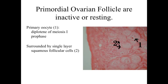The majority of the ovarian follicles are going to be referred to as primordial ovarian follicles, and they're going to be in an inactive or resting phase. We see a relatively large primary oocyte with a distinct euchromatic nucleus and a very prominent nucleolus, surrounded by a single layer of follicular cells. In the primordial or resting ovarian follicle, these follicular cells are going to be squamous — relatively flat — so they're inactive.